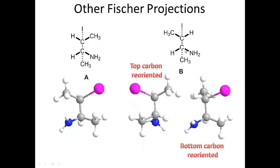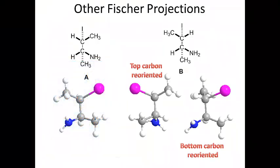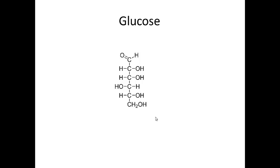Now let's look at isomer B. In the 3D depiction of B, the hydrogen is pointed back for the top carbon, and for the bottom carbon the hydrogen is also pointed back. The question for you is: can you determine the configuration of the top and bottom stereocenters, and can you tell me the relationship between these two stereoisomers — are they enantiomers or diastereomers?